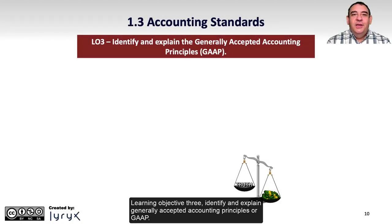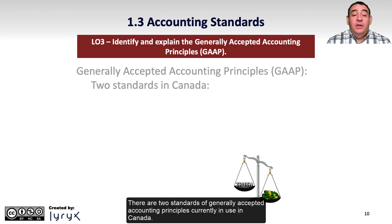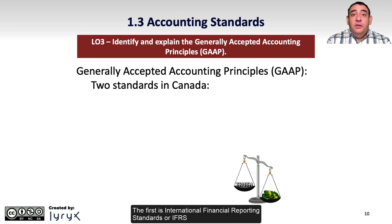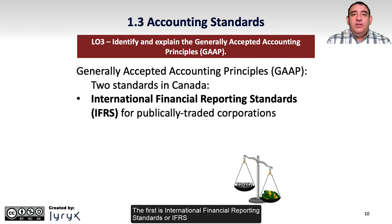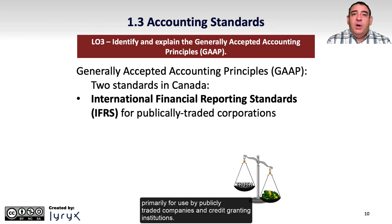Learning Objective 3: Identify and Explain Generally Accepted Accounting Principles, or GAAP. There are two standards of Generally Accepted Accounting Principles currently in use in Canada. The first is International Financial Reporting Standards, or IFRS, primarily for use by publicly traded companies and credit-granting institutions.